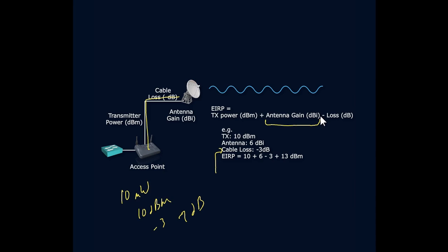And so let's say the antenna gain here was a 6 dBi antenna. So we add 6 dBi to the 7 that we have when we get there and we end up with an effective 13 dBm.